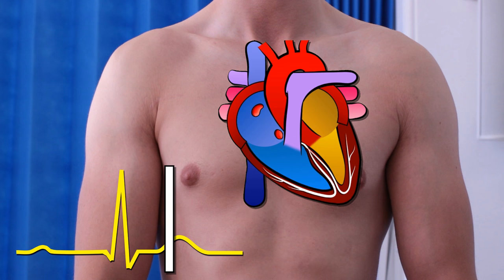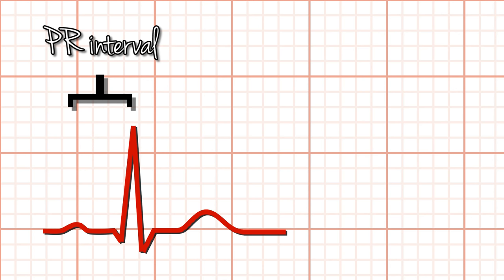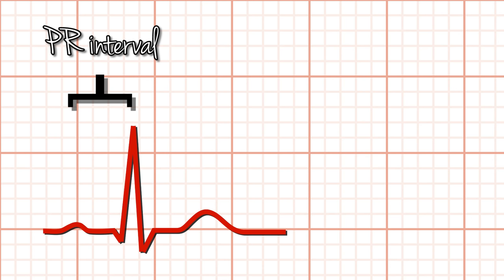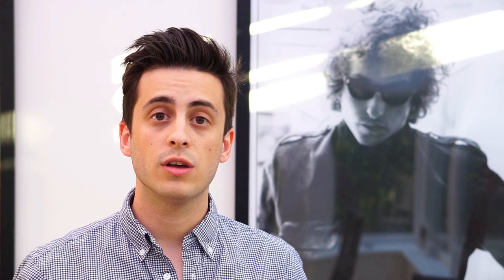On the ECG, this appears as a prolonged PR interval — that's the distance between the P-wave and the R-wave. On a normal ECG, this is usually between 0.12 and 0.20 seconds, or three to five small ECG squares. So first degree heart block is where the PR interval is longer than 0.2 seconds, but every P-wave is still followed by a QRS complex. If the PR interval is longer than one big ECG square, you've got yourself a spot of first degree heart block.